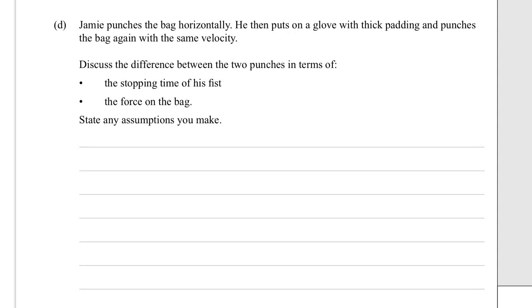Part d: Jamie punches the bag horizontally, then puts on a glove with thick padding and punches the bag again at the same velocity. Discuss the difference between the two punches in terms of the stopping time of his fist and the force of the bag.